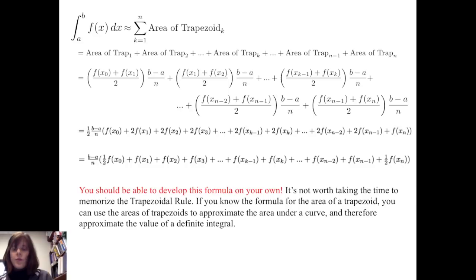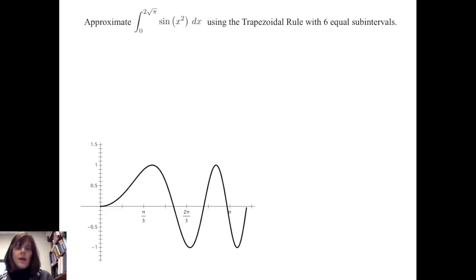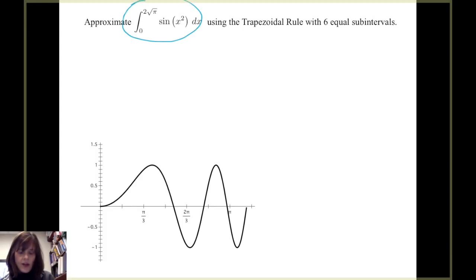You should be able to develop this formula on your own. It's not worth taking the time to memorize the trapezoidal rule — if you know the formula for the area of a trapezoid, you can use the areas of the trapezoids to approximate the area under the curve and approximate the value of the definite integral. Let's apply the trapezoidal rule to a specific example: approximate the definite integral from 0 to 2√π of sine of x squared dx using the trapezoidal rule with six equal subintervals. Notice that this is not an integral for which I can easily find an antiderivative.